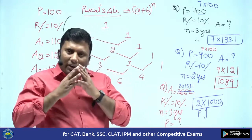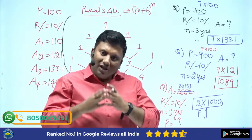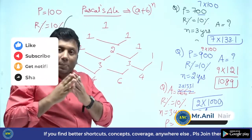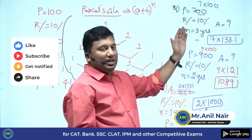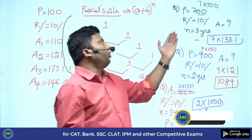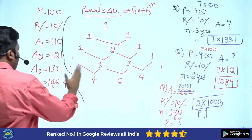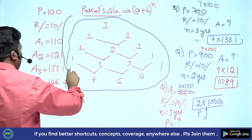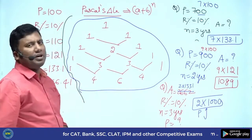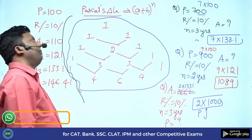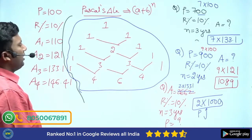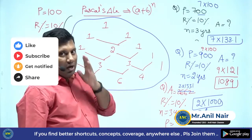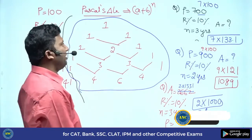Pascal's triangle can be used to determine the coefficients of (a + b) power n. It is effectively used when R is 10 percentage. Whenever you find 10 percentage and the number of years is 2, 3, or 4 years — after 4 years you will get a carry — so Pascal's triangle works for N less than or equal to 4. This is an extremely important concept: binomial theorem expansions can be done using Pascal's triangle.